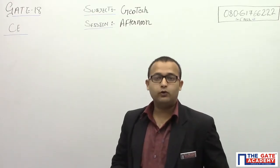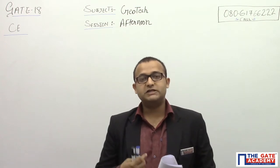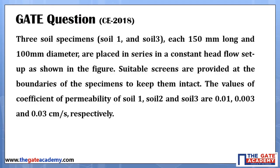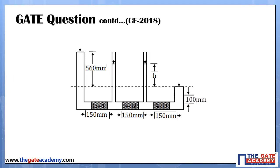Hello, this is Samir Javala. Today we are going to discuss one problem of geotechnical engineering. This problem was asked in civil engineering GATE 2018 in the afternoon session. The problem is: three soil specimens — soil 1, soil 2, and soil 3 — each 150 mm long and 100 mm in diameter are placed in series in a constant head flow setup as shown in the figure. The value of H in the setup is to be found.